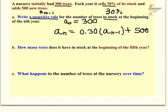Part B says, how many trees does it have in stock at the beginning of the fifth year? So I'm going to talk through a shortcut that you could do on your calculator. You could type this recursive sequence in five times for sure. But what you can do is, if you type in the initial amount, so just go to your home screen, type in 300, and just press enter. Then you're going to type in 0.3 times answer, and your answer button is above your negative key, plus 500.